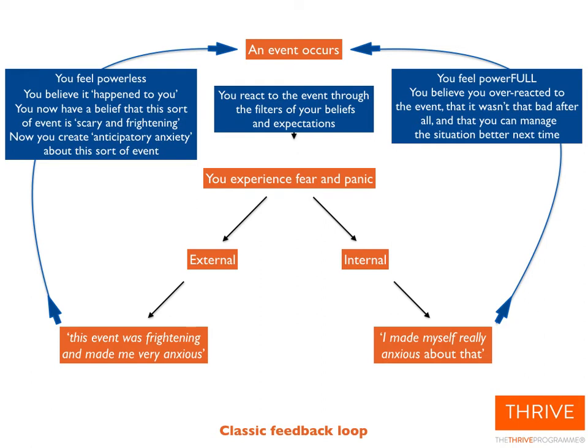Looking at the full feedback loop: the internal person thinks, 'I made myself really anxious about that' — and actually feels powerful, because they realize they made themselves feel anxious. Although they felt anxious and stressed, they realize they didn't have to feel that way, that there's something they can do about it, something to calm themselves down. They believe they overreacted and it wasn't that bad, and that they can manage the situation better next time. So they completely calm down.